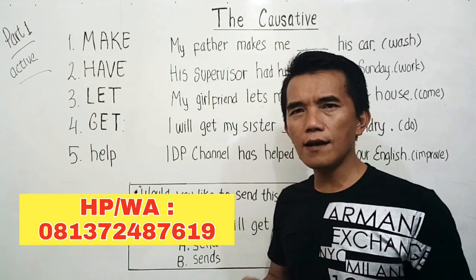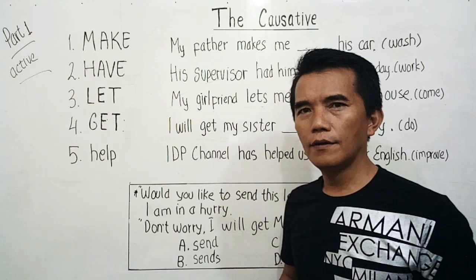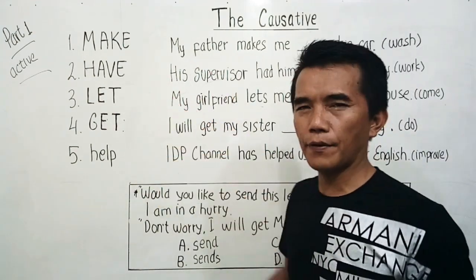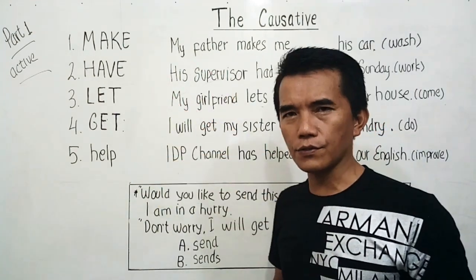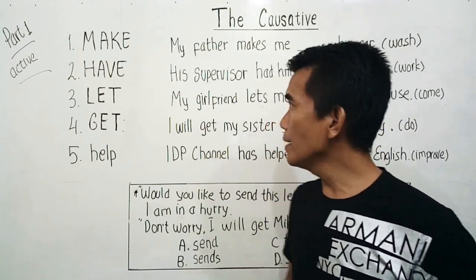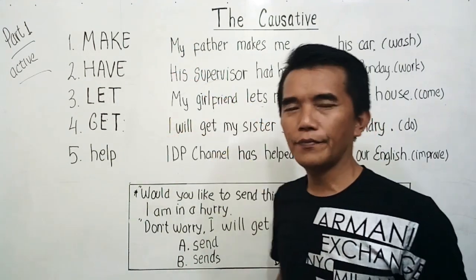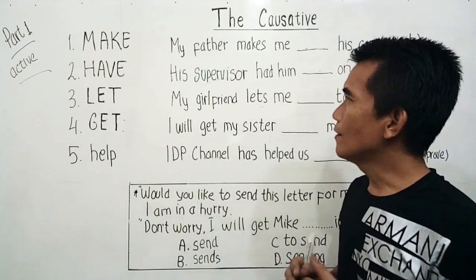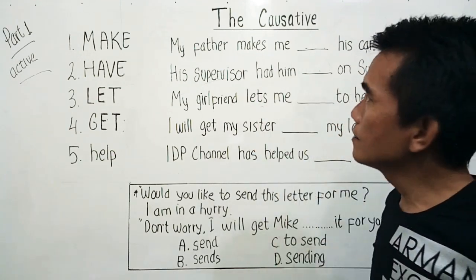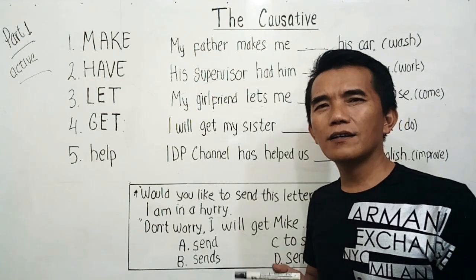What are the different meanings among them? For the words let and help, of course we have known exactly what the difference is. But what about make, have, and get? You will know it. Let's go to number one — how to use a causative verb and what does it mean.